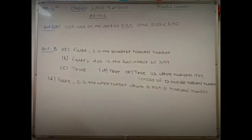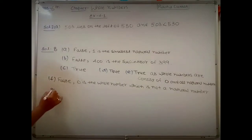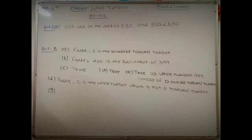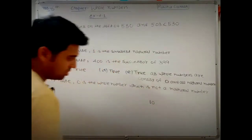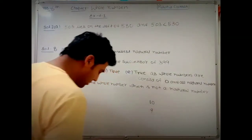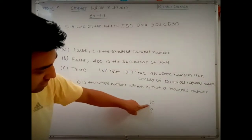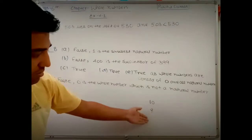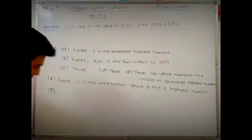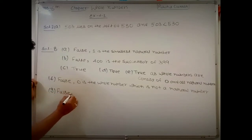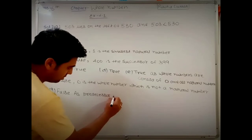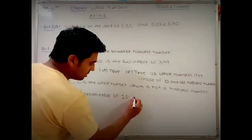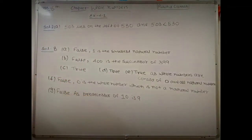Part g says: the predecessor of a two-digit number is never a single-digit number. Think about the smallest two-digit number, which is 10. Its predecessor is 9, which is a single-digit number. So it is possible, and this statement is false. In support: the predecessor of 10, the smallest two-digit number, is 9, which is a single-digit number.